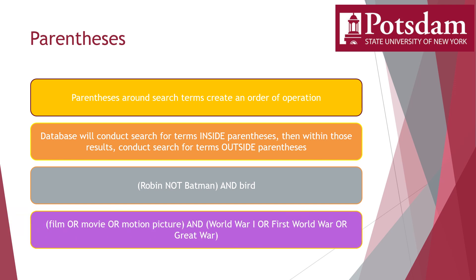You can stack parentheses to conduct multiple complex searches, which can save you a lot of time and effort sorting through irrelevant articles. For example, if you want to search for movies about World War One, there are a lot of different terms you might need to sort through. So you can conduct a search for synonyms of movie in one set of parentheses — film OR movie OR motion picture — and then another search for synonyms of World War One in another set of parentheses — World War One OR First World War OR Great War — and connect the two sets of parentheses with a Boolean AND. This will do a bunch of searches all at once, saving you the time and effort of conducting many different searches combining all of those terms in different ways.